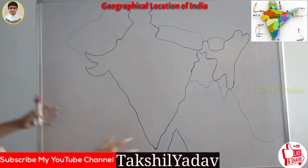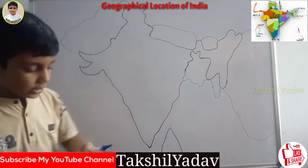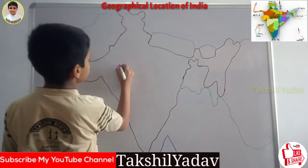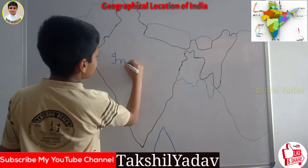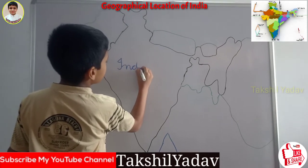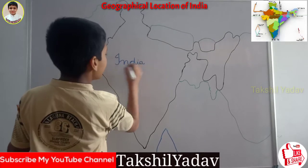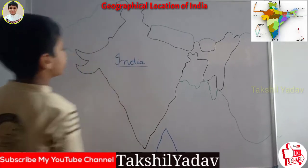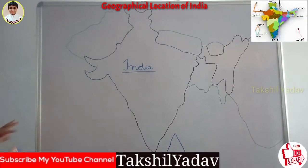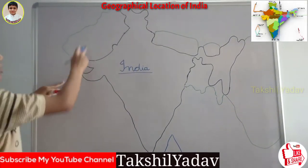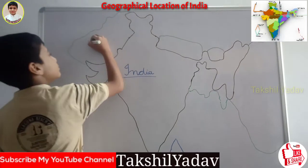This is India and this is the map of the countries around it. On the left side, that is west, we have Pakistan.